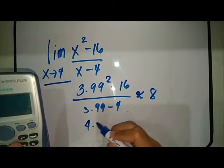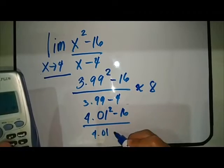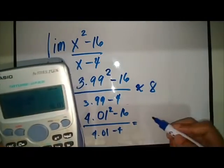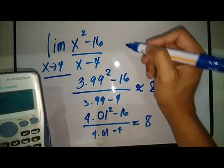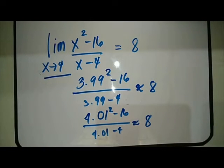Let's try a closer number from the right. Let's say x is equal to 4.01. So that is also approximately equal to 8. So we can say that 8 is the limit of (x² - 16)/(x - 4) as x approaches 4.